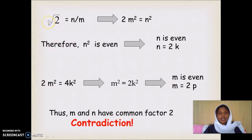Since we have assumed that it is rational, root 2 is rational, we have written root 2 equal to n by m.